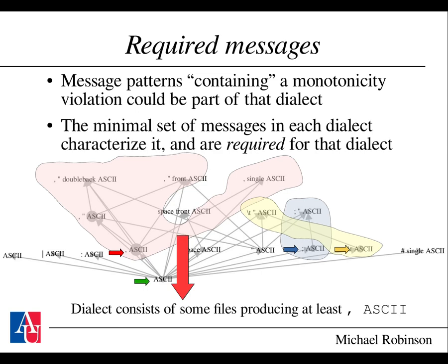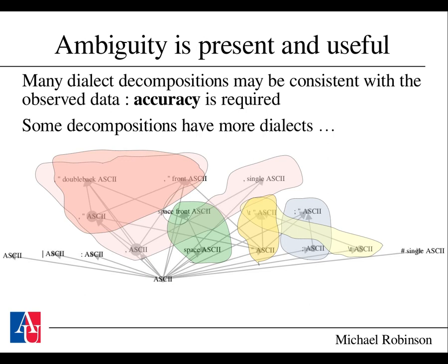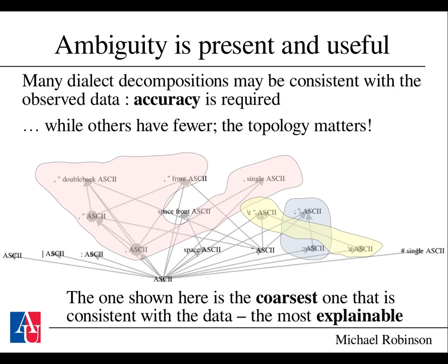Ambiguity is present in these file format specifications since there's no actual specification. You could imagine a finer or coarser decomposition into dialects. The topology — the open cover involved — matters. The coarsest decomposition consistent with the data is the easiest to explain because there's simply less to explain.